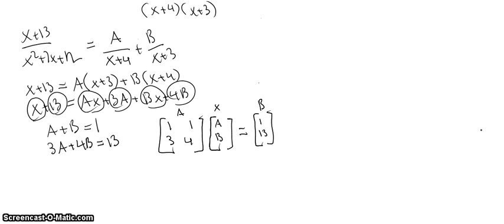And so using a graphing calculator, we can enter these matrices in. And then we can calculate the inverse of A times matrix B is equal to X. And so in this case we get X is equal to negative 9 and 10.